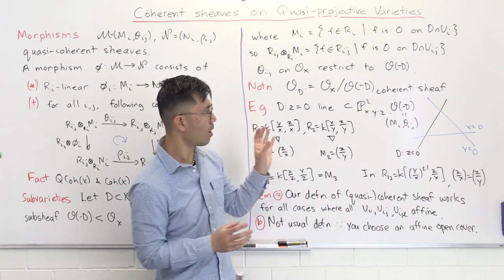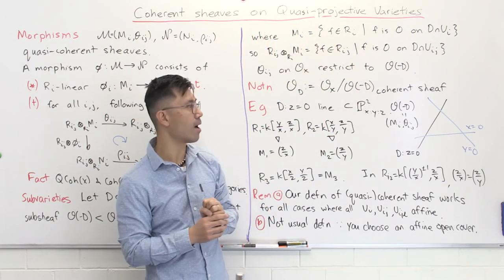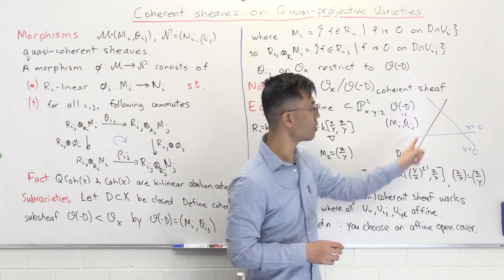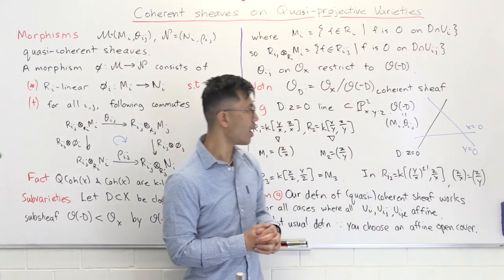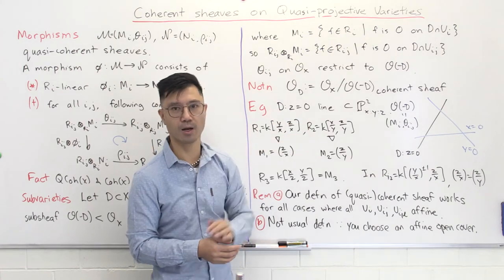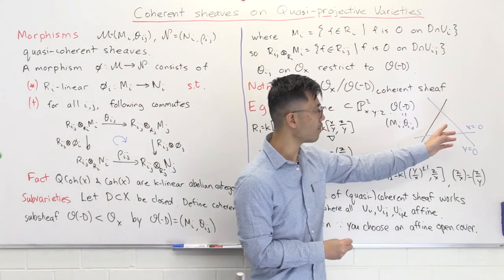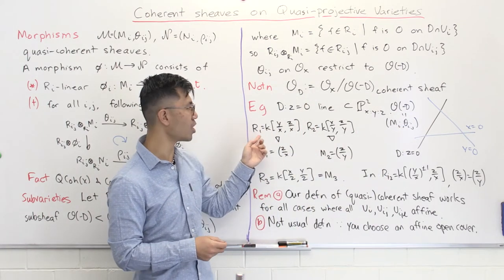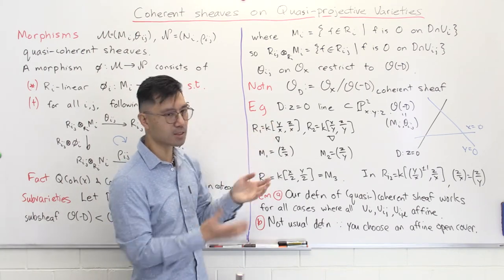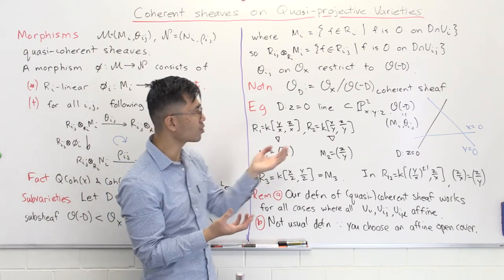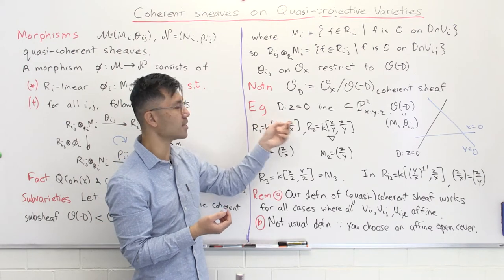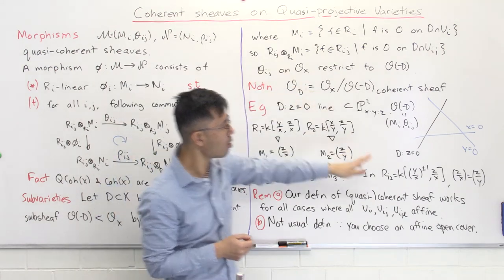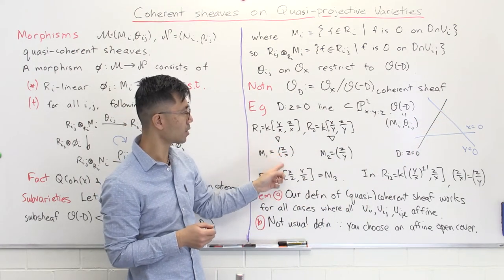Let's do an example. We look at the projective plane P² with homogeneous coordinates X, Y, and Z, and the three coordinate lines: Z = 0, X = 0, and Y = 0. We pick the closed subset D to be the Z = 0 line. We have three affine patches which are the complements of each of these lines. For the first patch where X is non-zero, the coordinate ring R₁ is the polynomial ring in two variables Y/X and Z/X. The ideal sheaf on this patch corresponding to Z = 0 is the ideal generated by Z/X — a proper ideal inside R₁. For the second patch where Y is non-zero, R₂ = k[X/Y, Z/Y], and the ideal sheaf is generated by Z/Y.